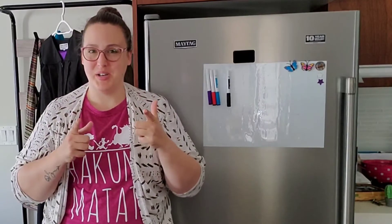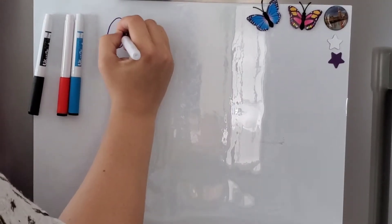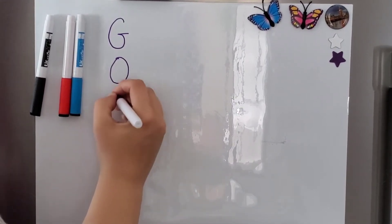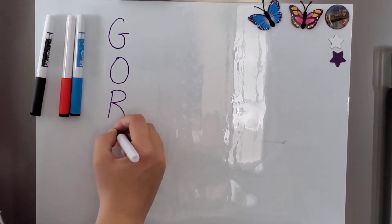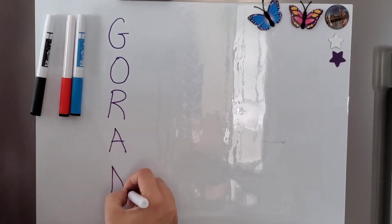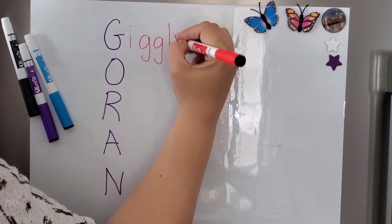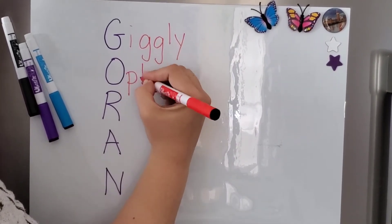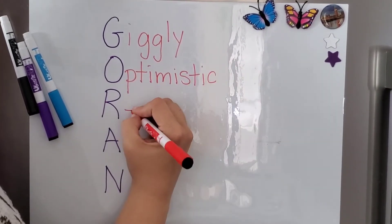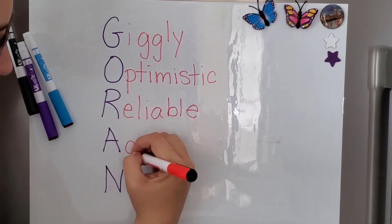So here's how you write an acrostic poem. Start by writing the name of whoever or whatever you want to describe vertically from the top to the bottom of your page. Next, look at your first letter and think of a word starting with that sound that describes the person or thing that your poem is about. Keep going with each of the letters until you get to the bottom.